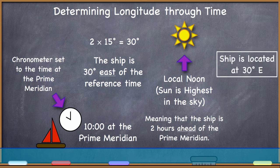And when you understand this concept and you are able to know the reference time at a given position and check your local noon, your local astronomical noon, then you will be able to determine how many degrees east or west based on whether you are behind or ahead of the reference time you are from that location.